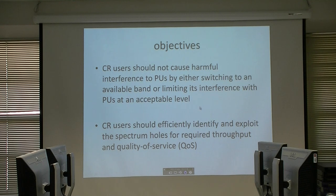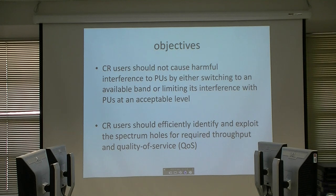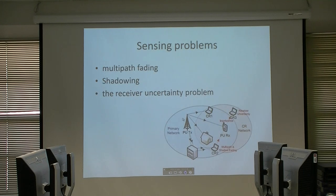The objectives of cognitive radio are: first, to communicate together with minimal interference to the primary user; and second, to sufficiently identify and exploit spectrum holes for the required throughput and quality of service. In the sensing problem, we have issues of shadowing, fading, and receiver uncertainty.